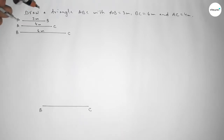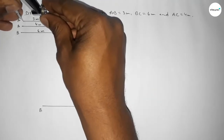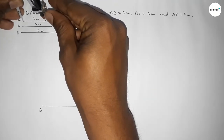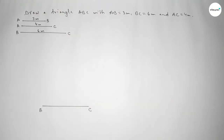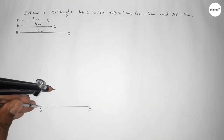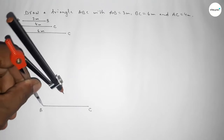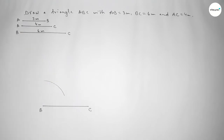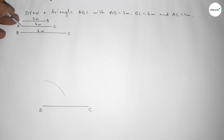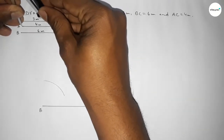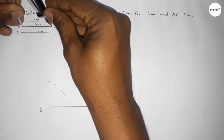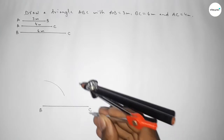Now we take the length AB equal to three centimeters using the compass, place the compass on point B, and draw an arc. Then we take the length AC equal to four centimeters using the compass.